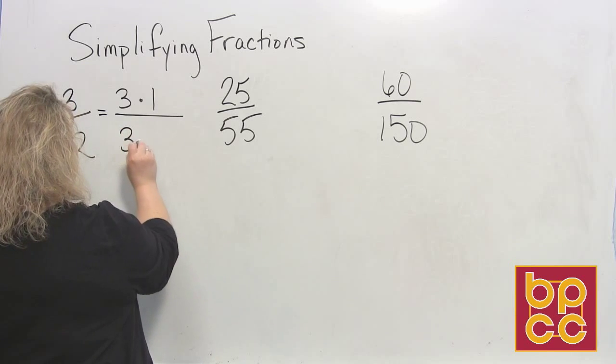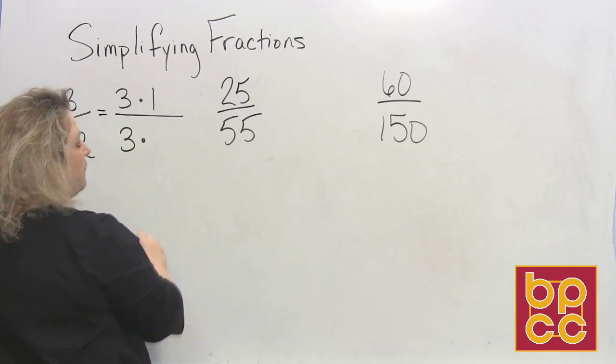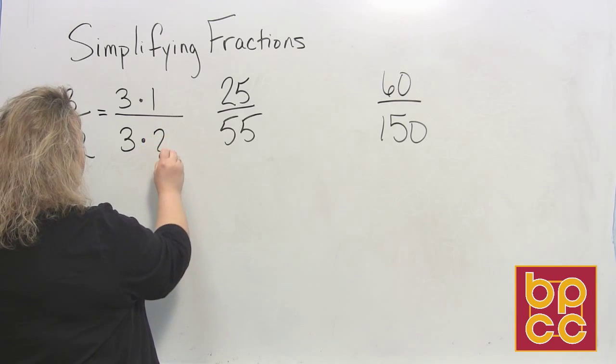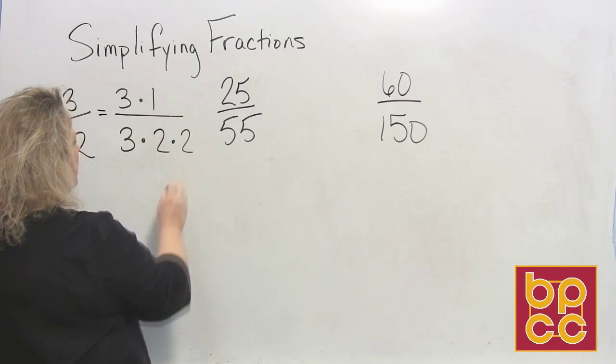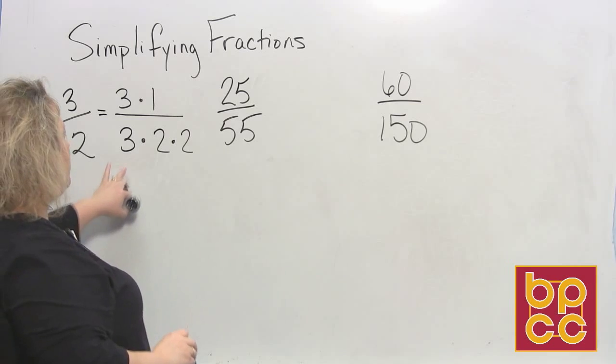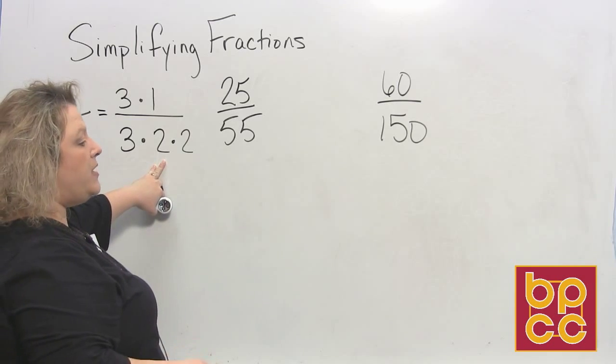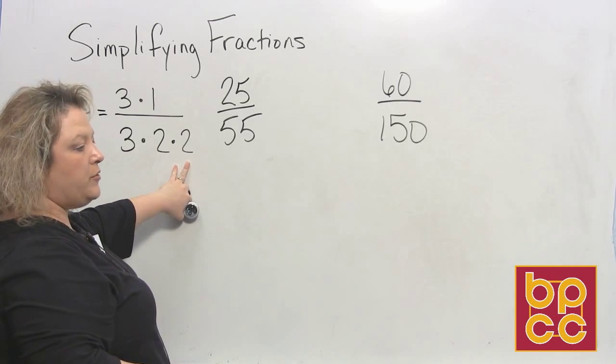So that would be 3 times 4, but 4 can be reduced again. 4 is 2 times 2. So the prime factorization for 12 is 3 times 2, which would make 6, times 2 more, which would make 12.